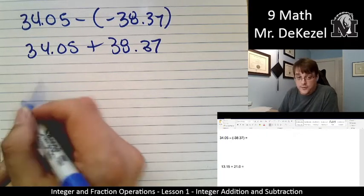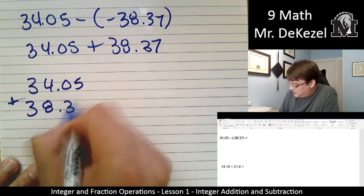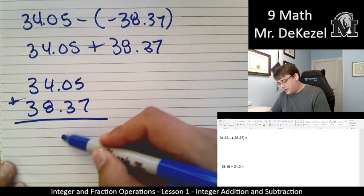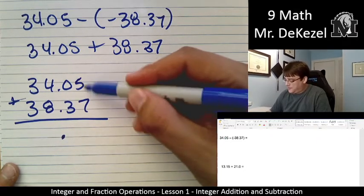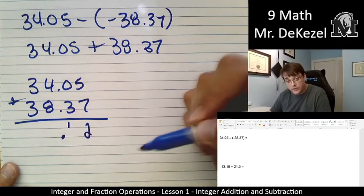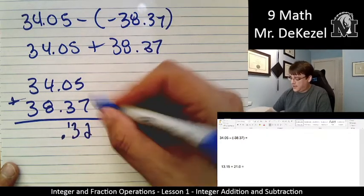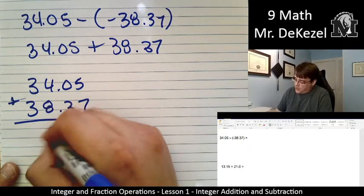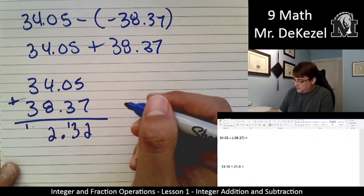34.05 plus 38.37. When we're adding numbers with decimals, we just bring the decimal down into the same position that it is in the other numbers here. So 5 plus 7 is 12. Let's put the 1 over there. This is 12. 0 plus 3 is 3. So we're going to add that later. We have our decimal. Then we have 4 plus 8. That is 12. So again, we're going to carry. And 3 plus 3 is 6. Plus 1 is 7.